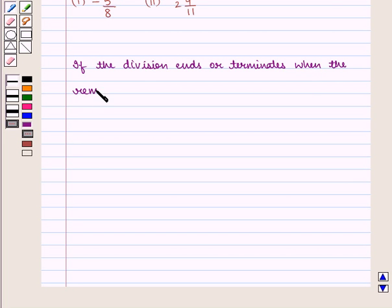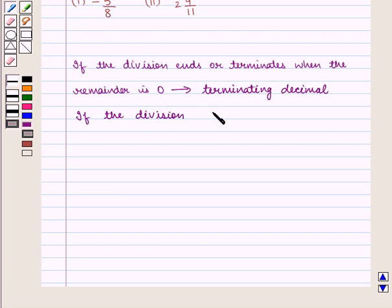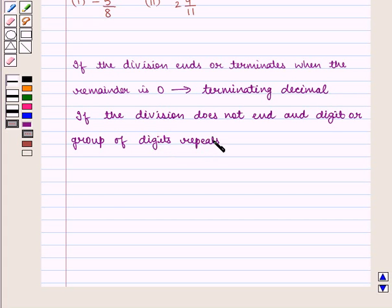then the decimal is a terminating decimal. And if the division does not end and a digit or group of digits repeats, then it is a non-terminating decimal.